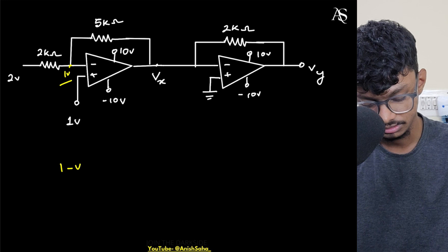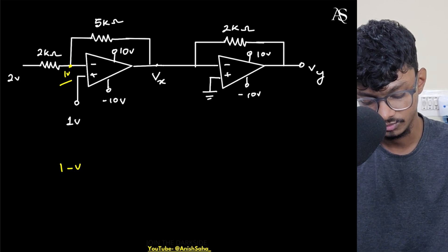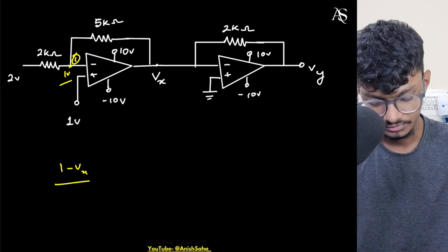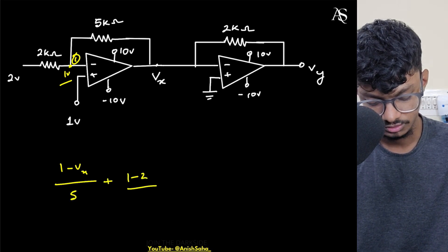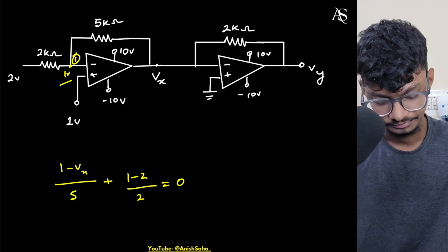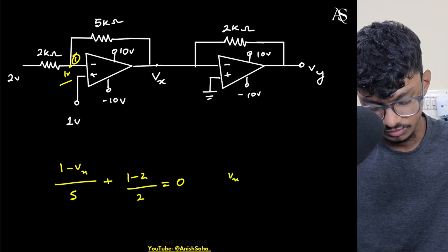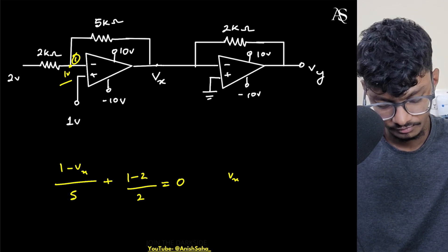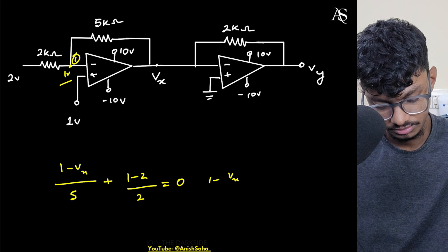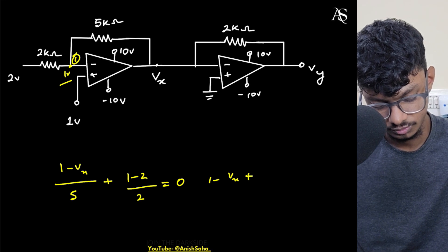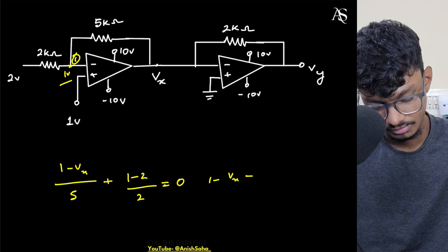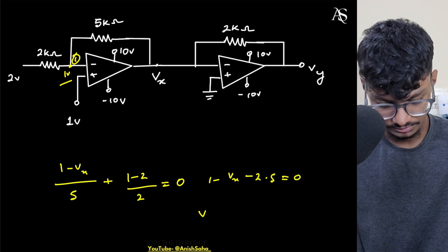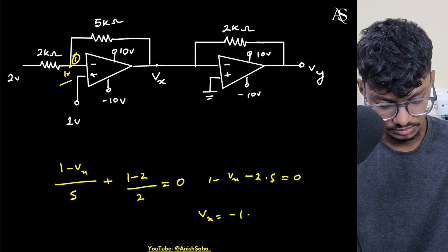KCL at node 1 will be (1 - Vx) / 5 + (1 - 2) / 2 = 0. So Vx will be equals to what? If I just multiply 5, this will be plus 2.5, this will be plus 2.5 minus 2.5 equals to 0. So your Vx will simply be minus 1.5 volts.